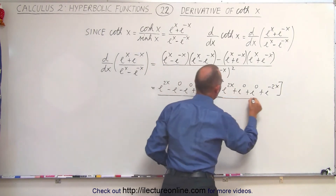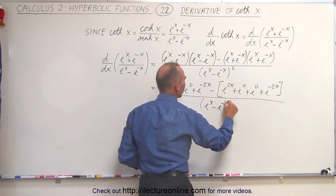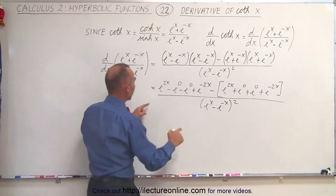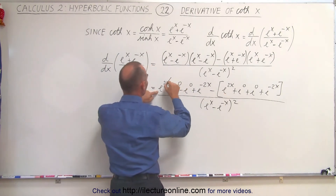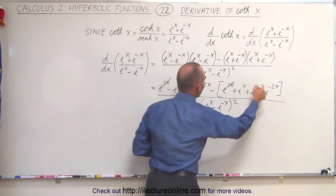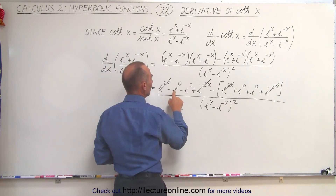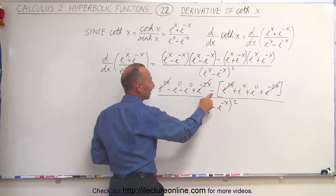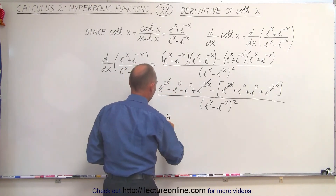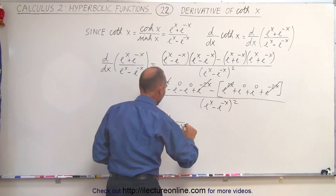The whole thing is still divided by the denominator, e to the x minus e to the minus x, quantity squared. Notice we have e to the 2x minus e to the 2x, so these cancel. And e to the minus 2x minus e to the minus 2x, so those cancel too. We're left with negative 1 and negative 1, and the sign makes these also negative 1 and negative 1, giving us negative 4, divided by e to the x minus e to the minus x, quantity squared.